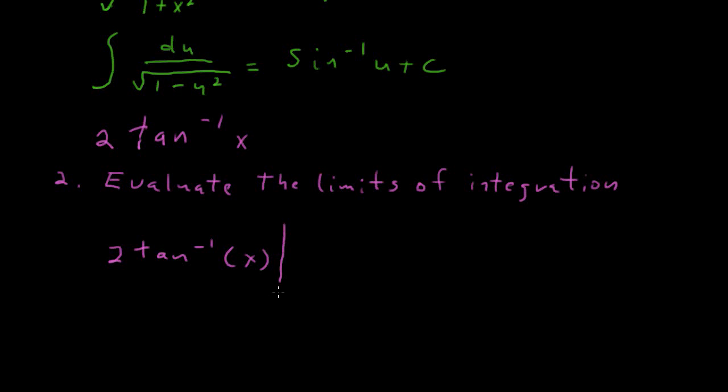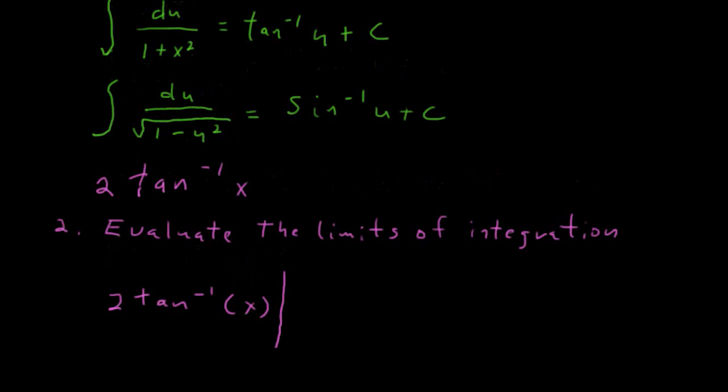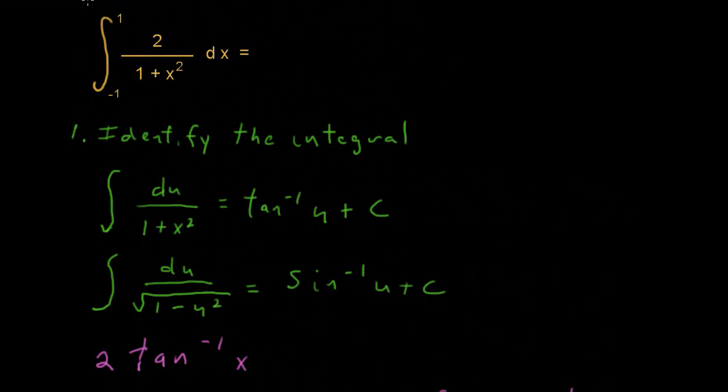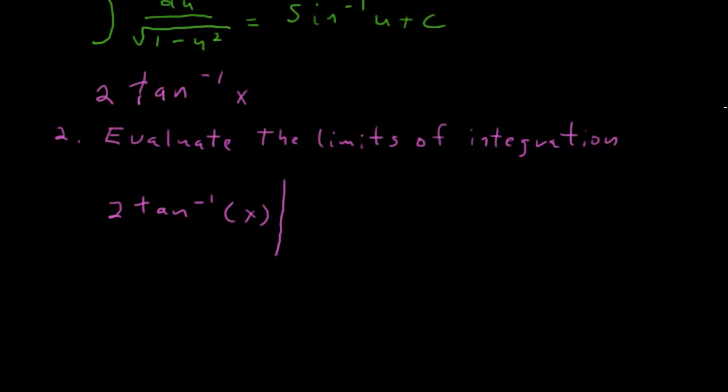So we want to write down our function, 2 times inverse tangent of x, and the limits of integration go from, and we see back up in our original problem, from negative 1 to 1. So we just put in our negative 1 to 1 as the values that we want to plug in. And we'll just plug them in. So 2 times the inverse tangent of 1. And then if you remember, we're to subtract, then 2 times the inverse tangent of negative 1.